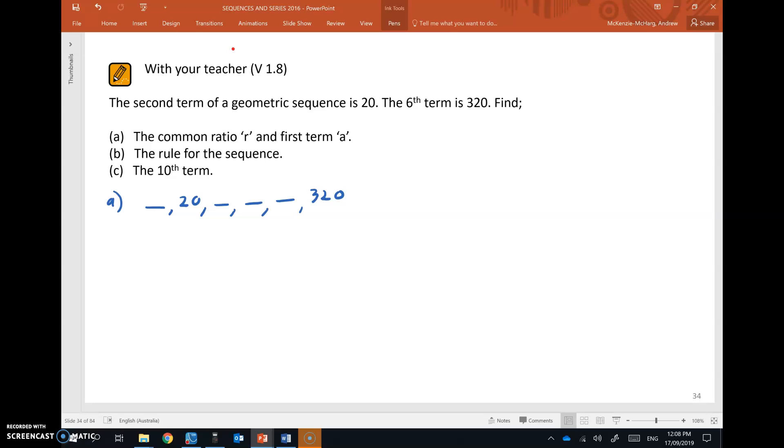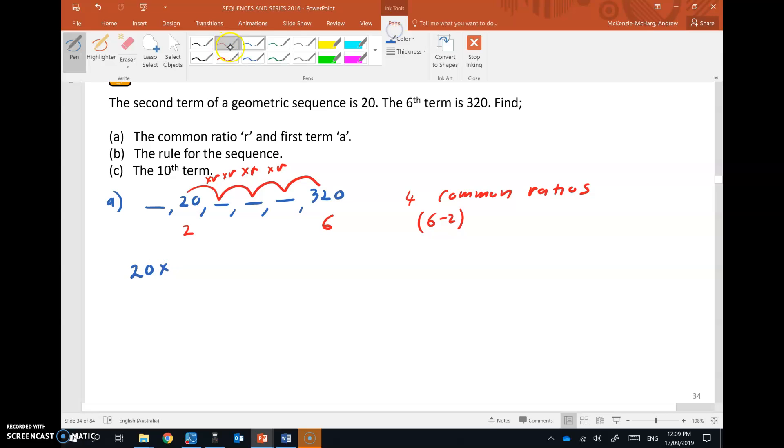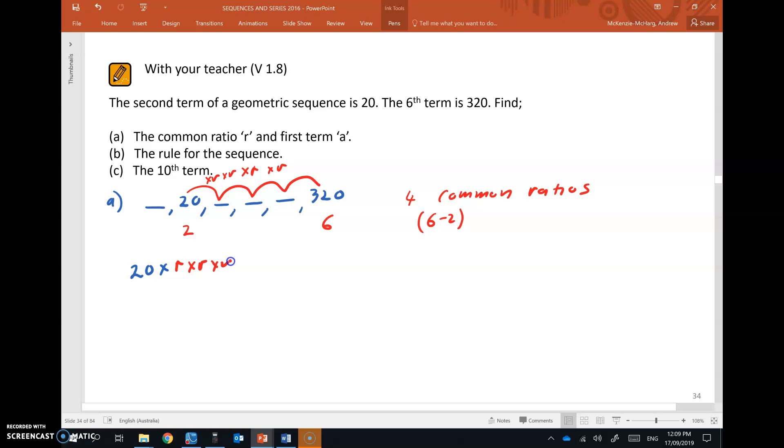we need to determine how many common ratios from the second term to the sixth term. Of course it's 4, right? Because 6 take 2 is 4. So basically to get from the second term we go 1, 2, 3, 4, we need to multiply by the common ratio 4 times. So R by R by R 4 times. So that means that 20, if we were to multiply that by R 4 times the common ratio, then that is going to give us 320.